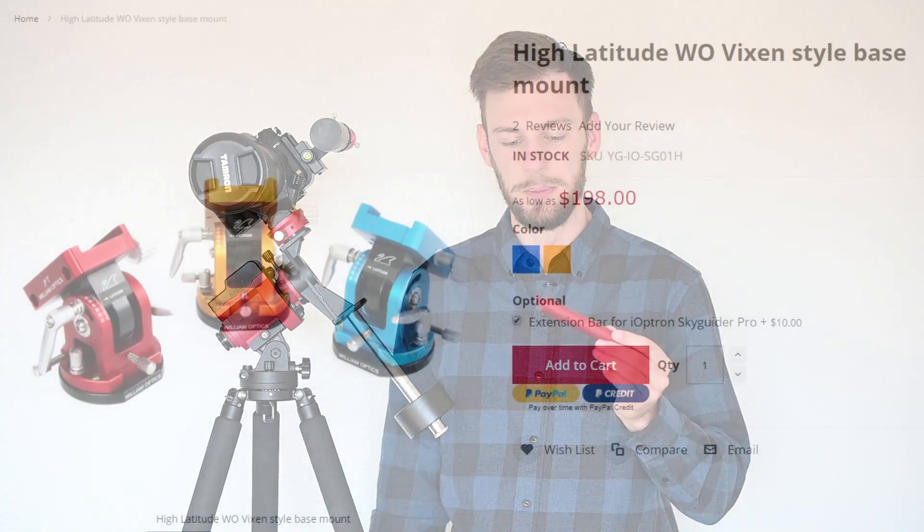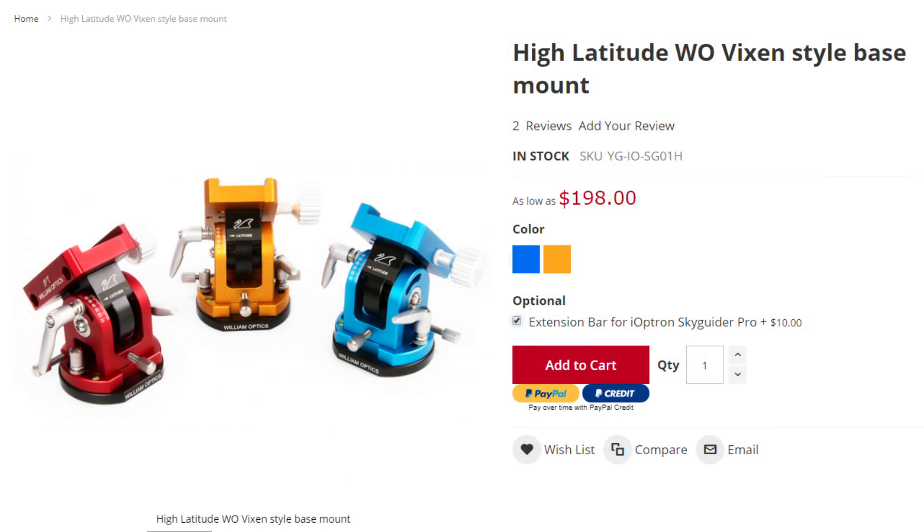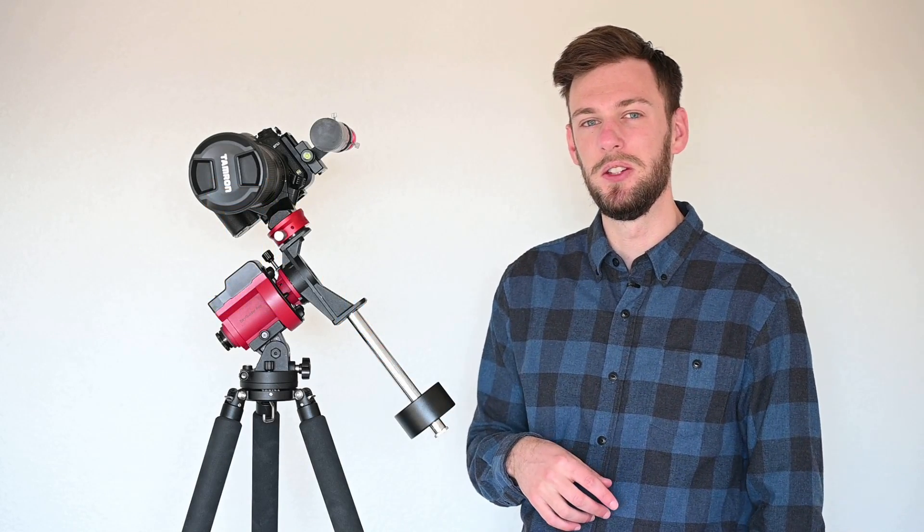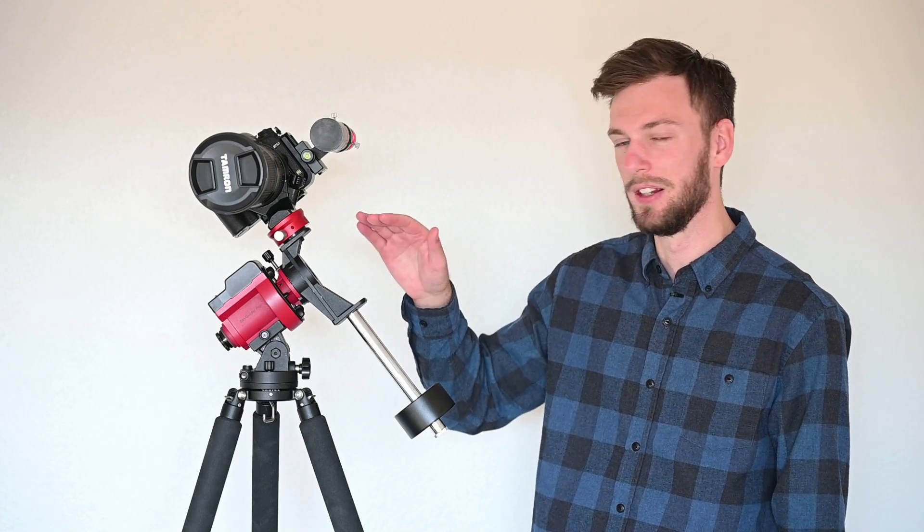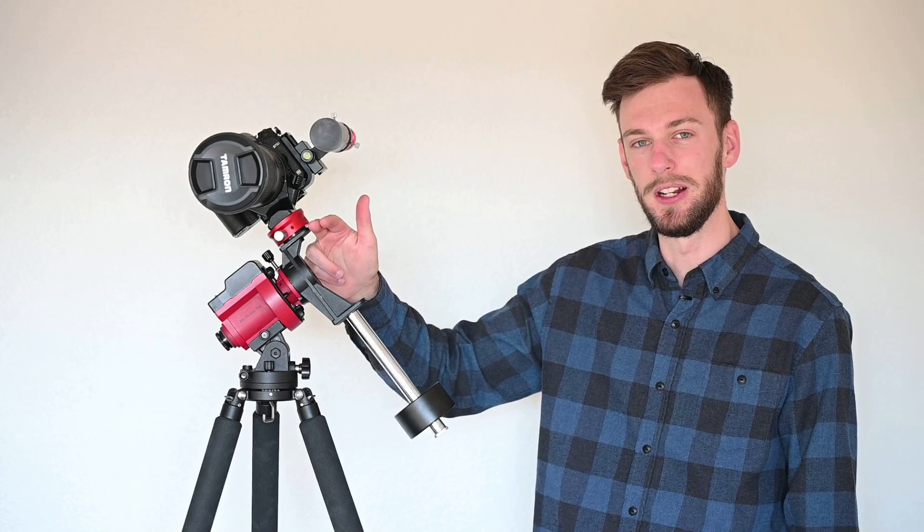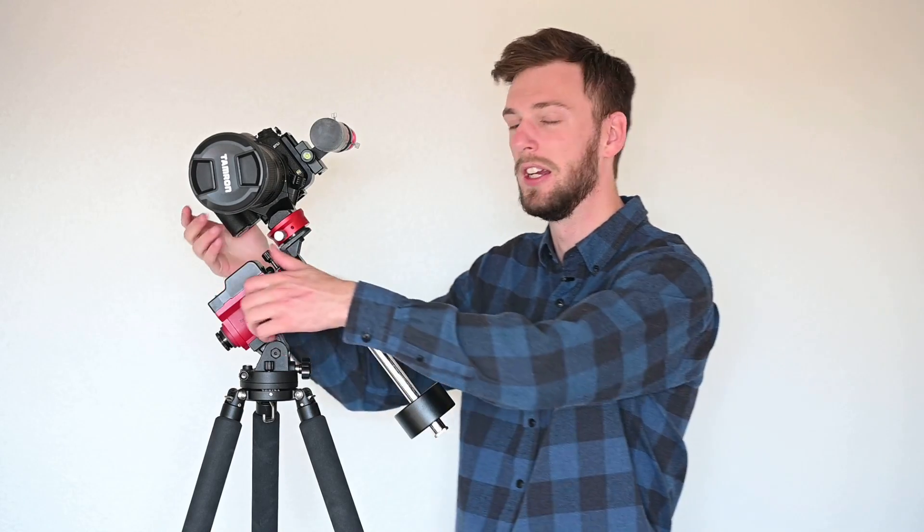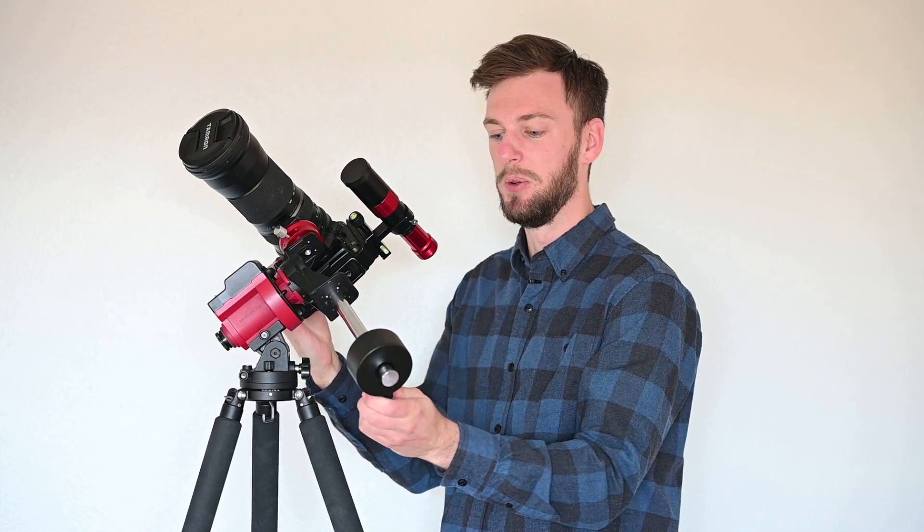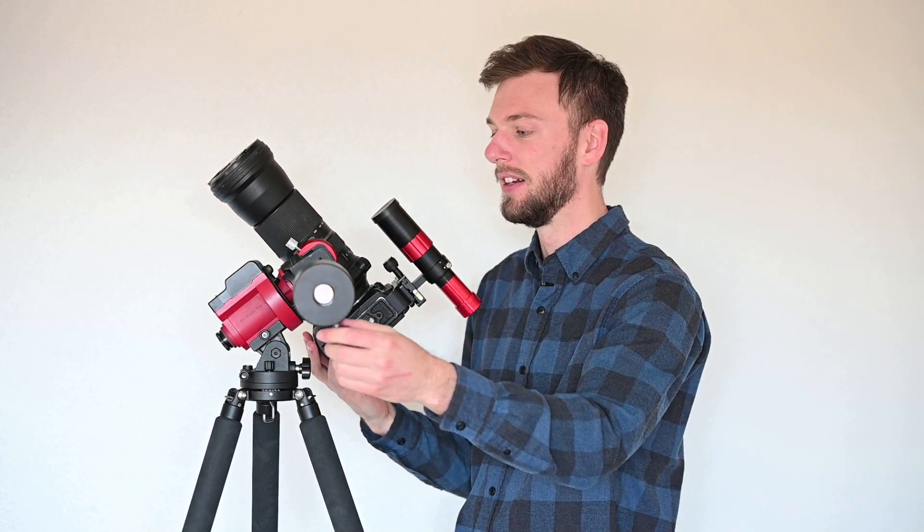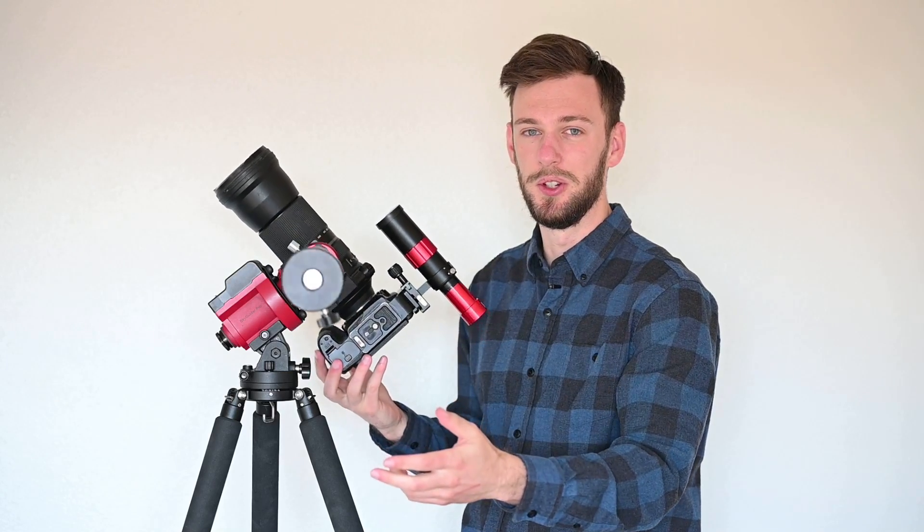The next piece we're going to look at is the extension rod from William Optics. This normally comes bundled with the base, and it's only like 10 bucks extra. So we're going to see how well it works. The main reason you would need this extension rod: let's say you've got a setup similar to mine with a big telephoto lens attached to the short end of the declination bracket, but maybe you had to attach an auto-guider as well. So if we do all that and make sure the counterweight's extended all the way, the camera is still just too heavy.